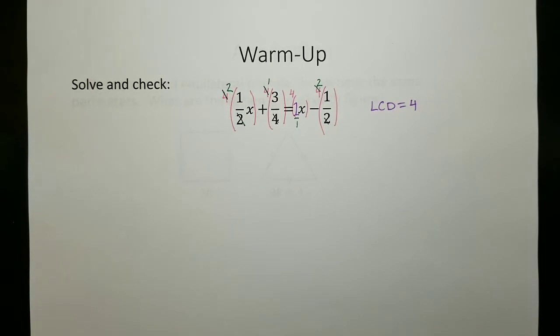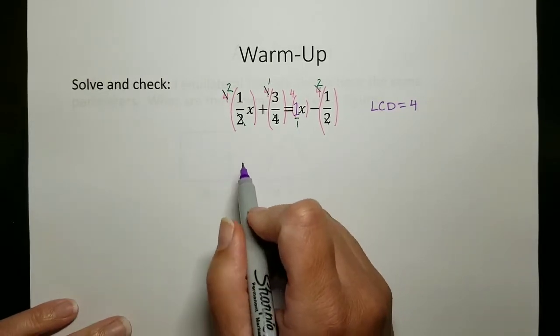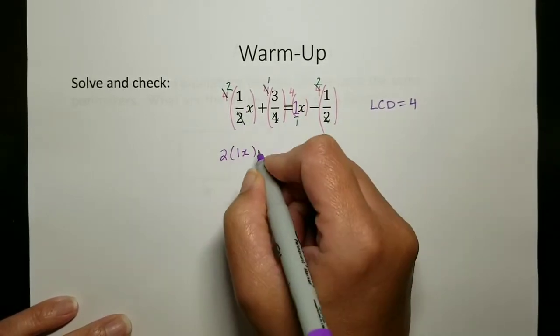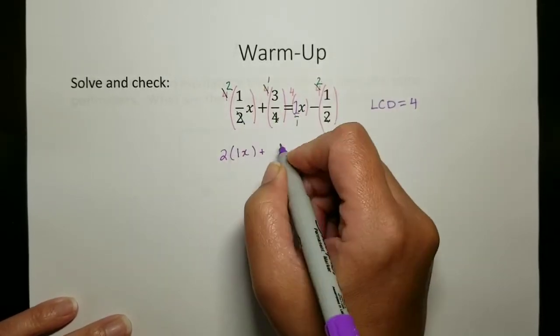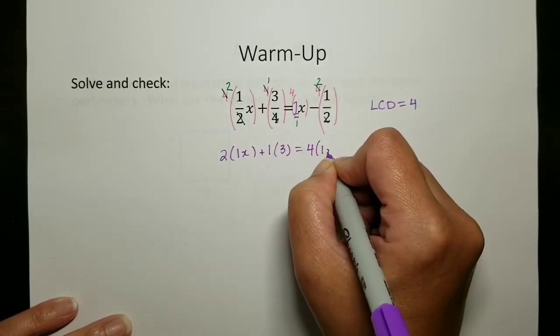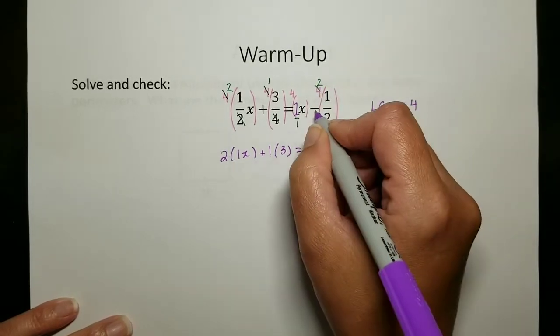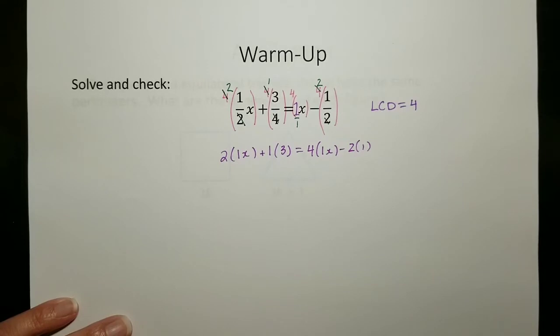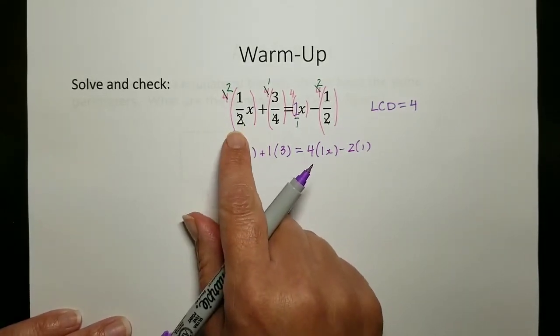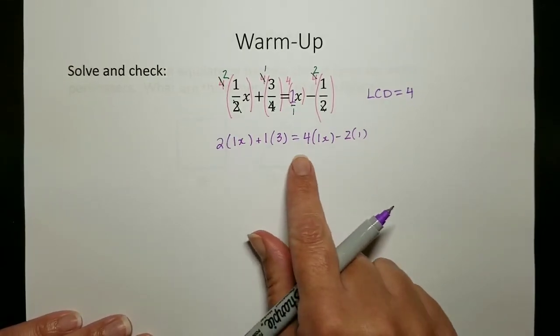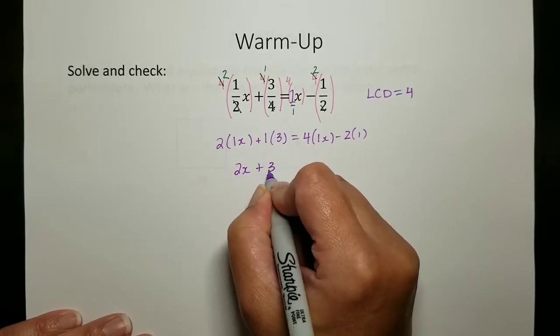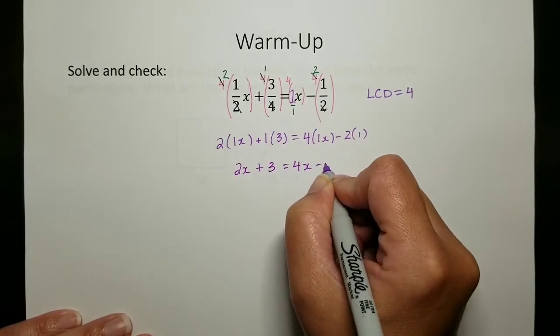I would very much encourage you to write out this next step. I've got two times one x plus one times three equals four times one x minus two times one. This can get a little bit messy when you put in all those brackets and reduce everything. I find that writing out this other step just to clear it out and clean it up really helps. So two x plus three equals four x minus two.